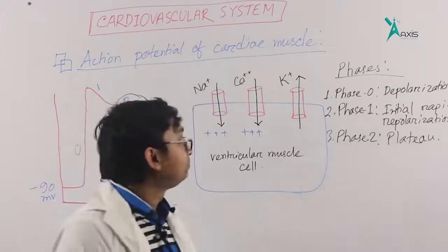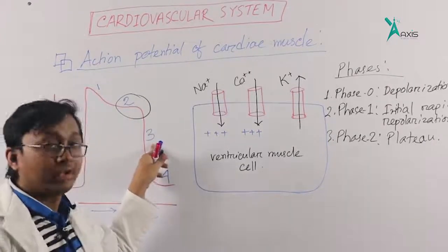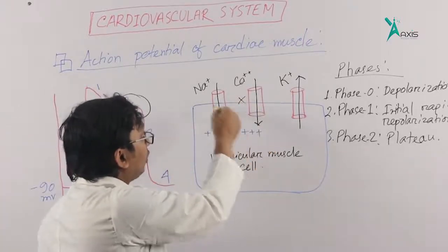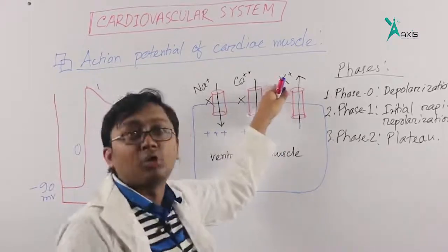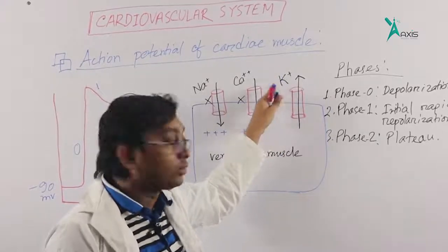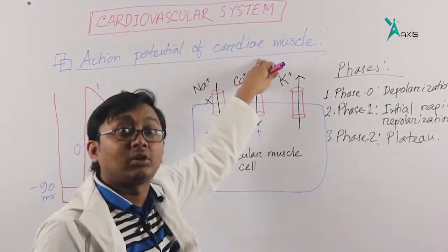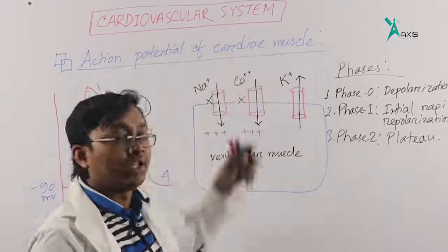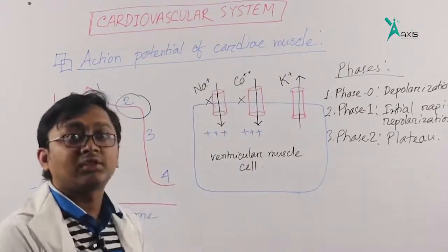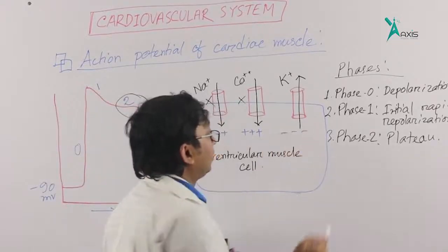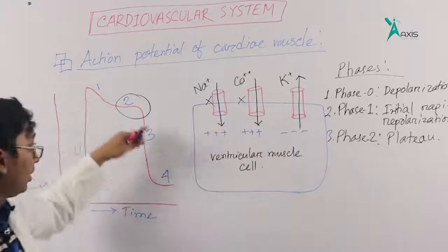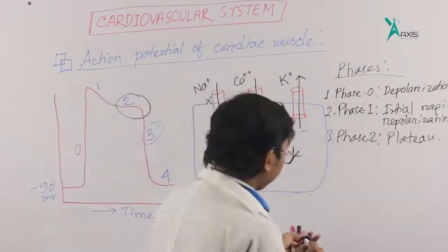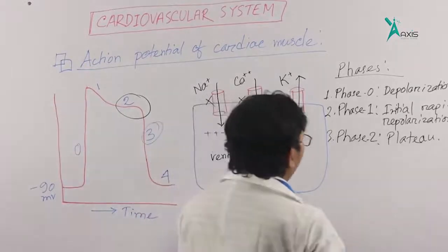Now how does Phase 3 happen? Calcium channels close, sodium is closed, and only potassium opens. Potassium efflux occurs because potassium is more in the cell. Positive charges are going out, so the cell becomes negative again. That is our repolarization Phase 3, which we call late rapid repolarization.